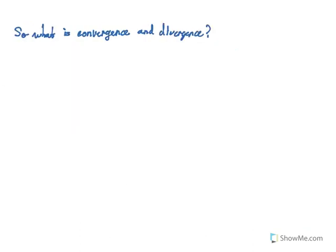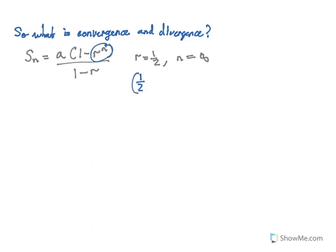This takes us to our next topic: what is convergence and divergence? Let's rewrite our equation: our sum is equal to a times one minus r raised to the n, over one minus r. Consider where our r value is equal to one-half and our series is infinite, so our number of terms is actually infinity. We realize that our r raised to the n value will actually go to zero — any fraction raised to infinity will go to zero. You can test this on your calculator by putting one-half raised to a ridiculously large number; it will spit back zero. So our equation simplifies to a times one, which is just a over one minus r.